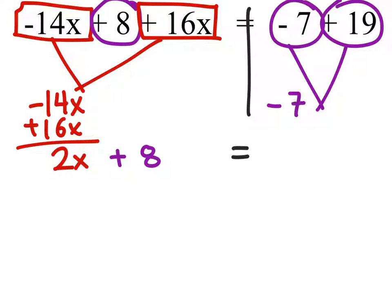So I have negative 7 plus 19. I have more positives than negatives, so 19 minus 7, that would give me 12.